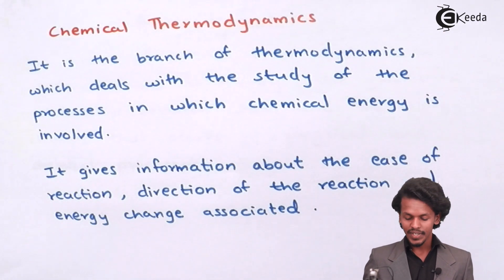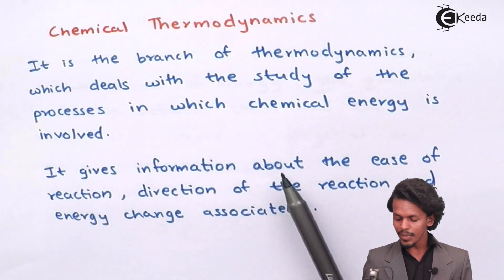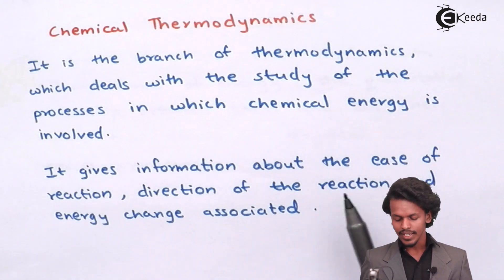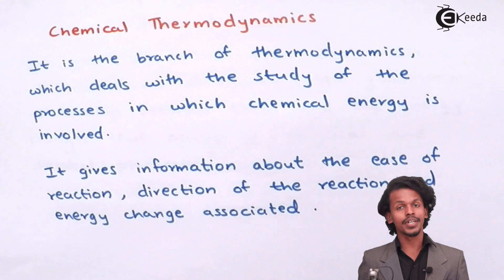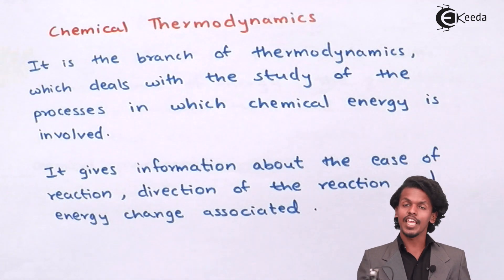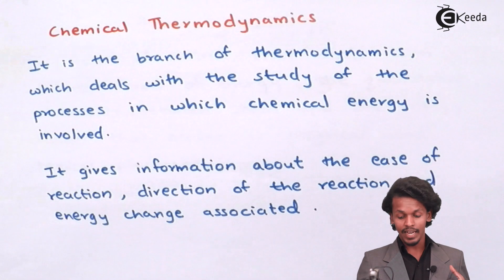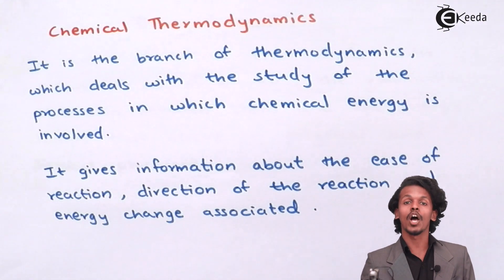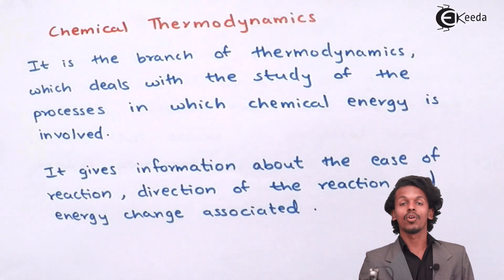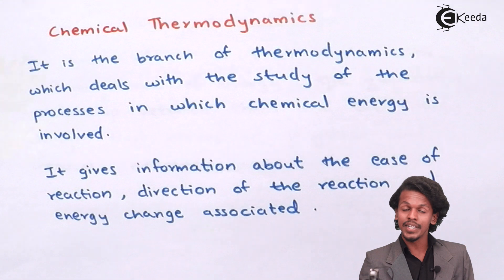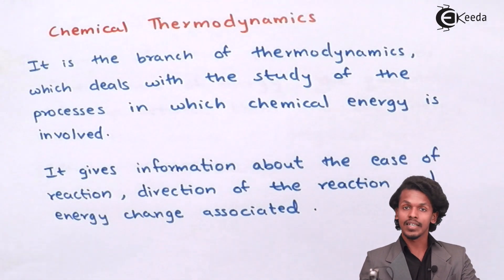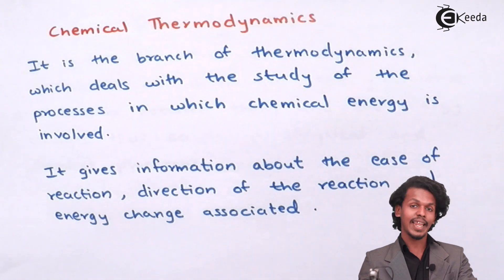Chemical thermodynamics gives information about the ease of the reaction, the direction of the reaction, and the energy change associated with it. It tells us how much energy has been released when the reaction is completed, or how much energy is required for the reaction to occur, and how easily the reaction will proceed if we provide that particular energy.